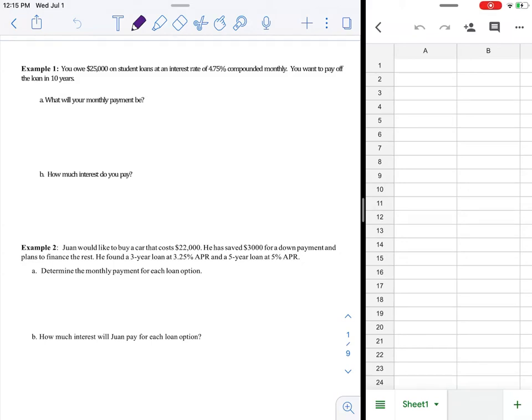Alright, so we're going to start with Example 1. It says you owe $25,000 on student loans at an interest rate of 4.75% compounded monthly. You want to pay off the loan in 10 years.